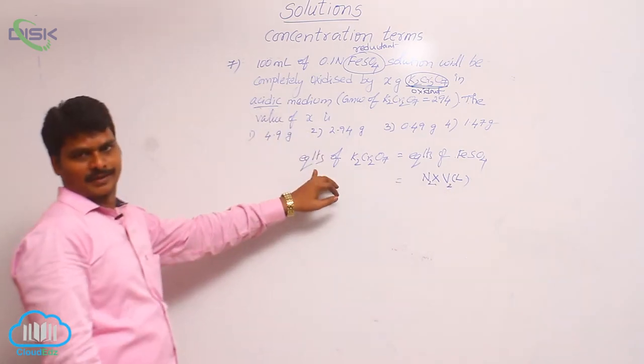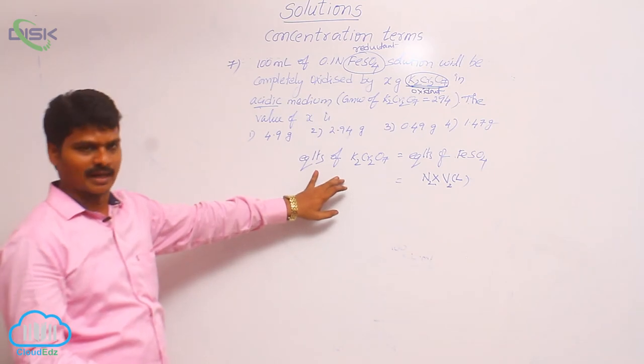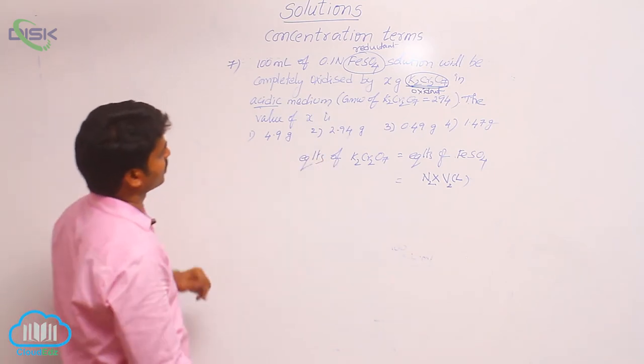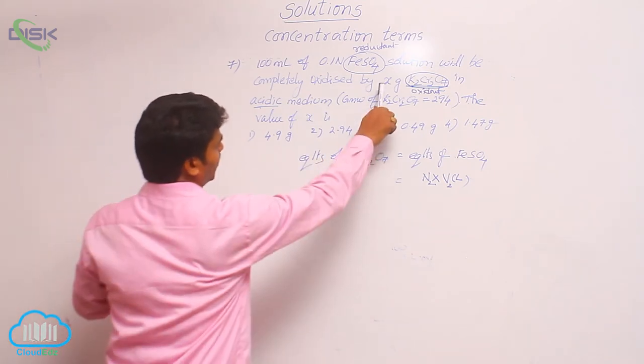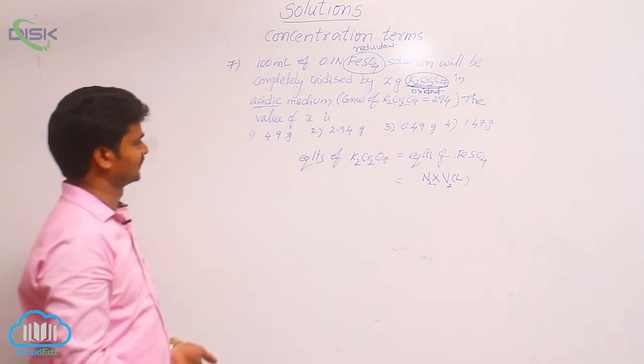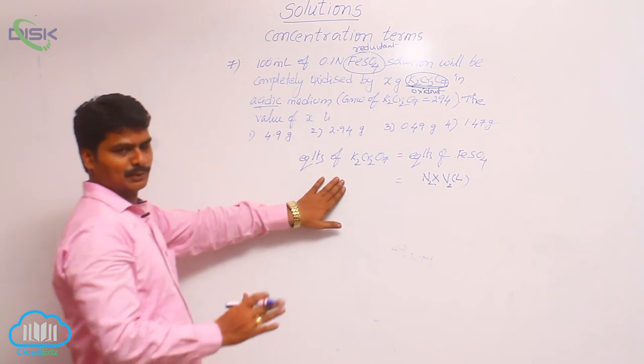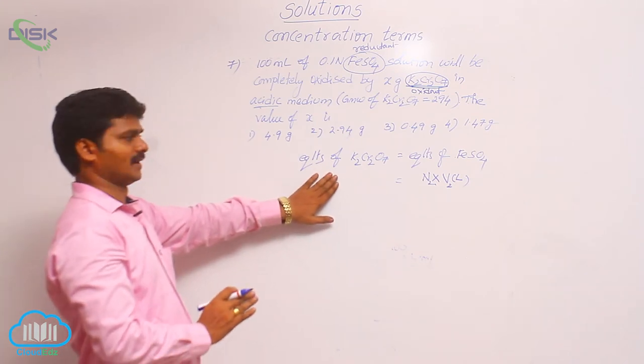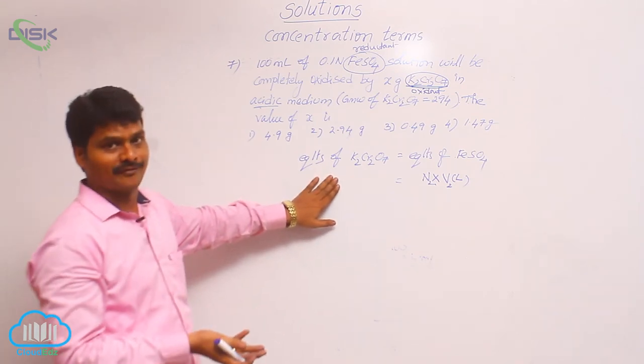Next, equivalents of potassium dichromate, how to calculate? What information is given? Only weight in grams is given, which is unknown and to be determined. For that, I use the formula: number of moles times N factor.